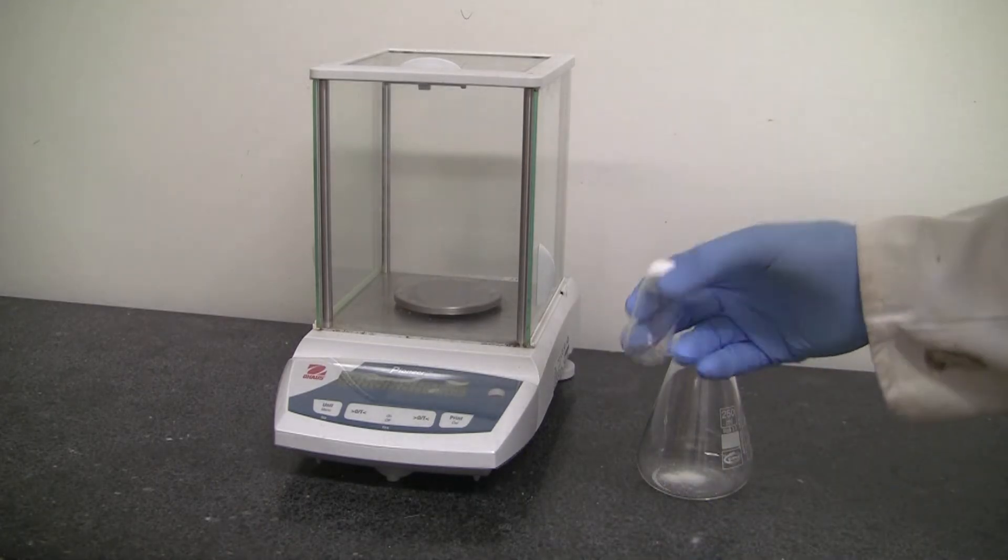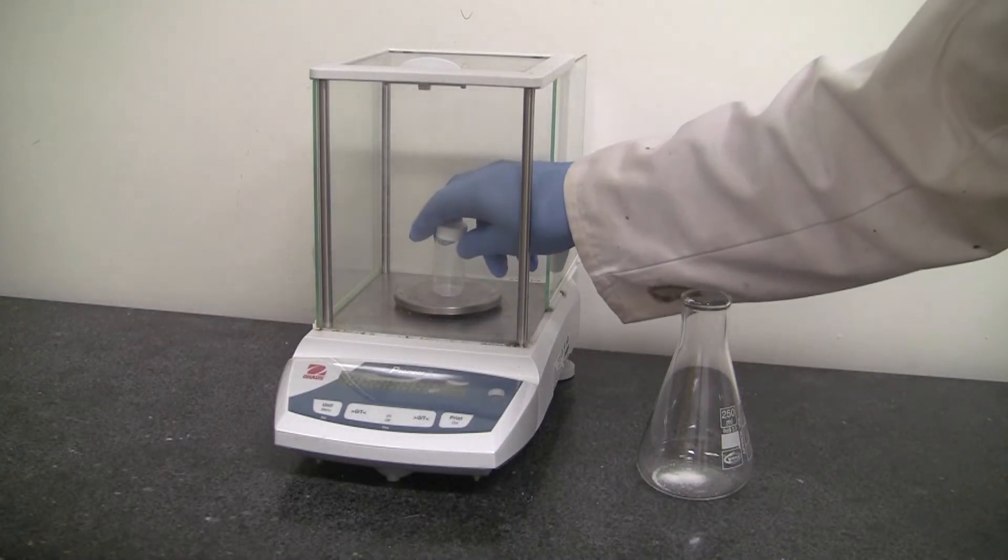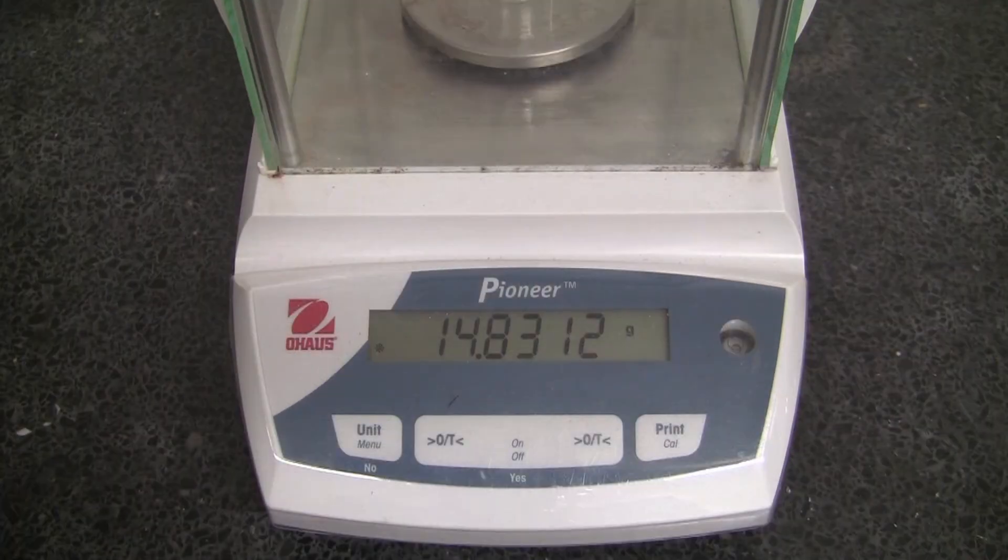Make sure the balance still says zero, place the vial back in, and take the reading again, all four decimal places. This is called weighing by difference.